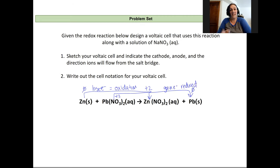So oxidation takes place at our anode so that zinc is going to be at our anode and reduction takes place at our cathode so that lead plus two will be our cathode.